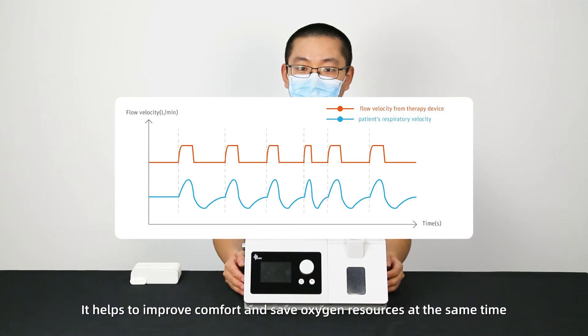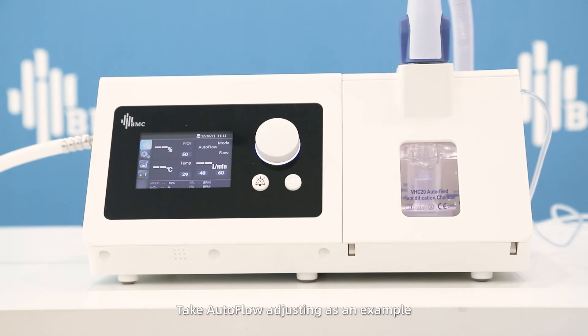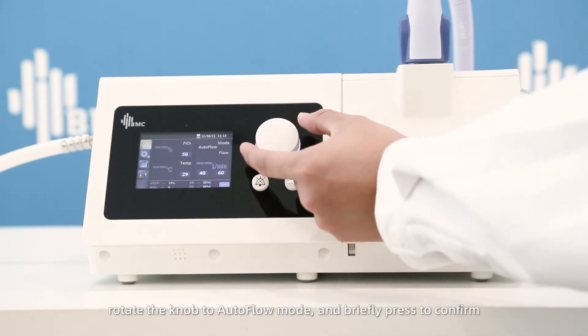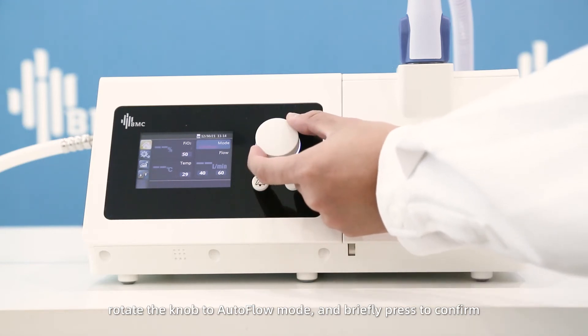Take auto flow adjusting as an example. Briefly press the selected mode, rotate the knob to auto flow mode, and briefly press to confirm.